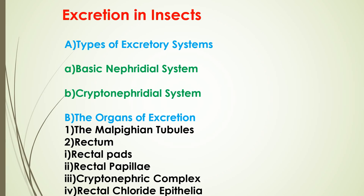The second type is the cryptonephridial system. In some insects, the distal end of Malpighian tubules is closely associated or inserted into the rectum, forming the cryptonephridial or cryptosolinar system. This system is found in larvae and adults of Coleoptera, larvae of Lepidoptera, and some Hymenoptera and Neuroptera.